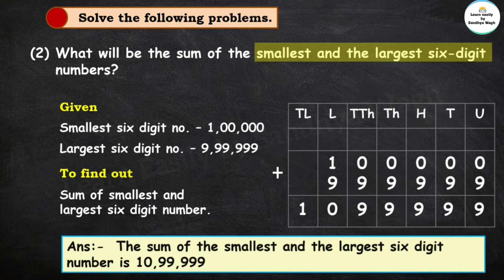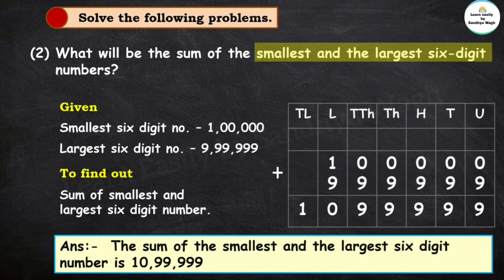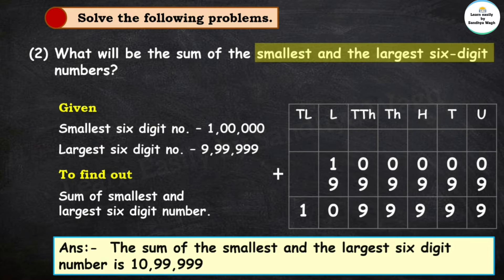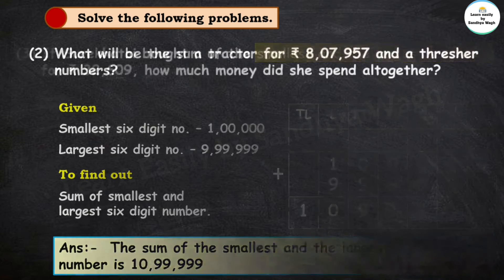So our final answer is: the sum of the smallest and the largest 6-digit number is 10,99,999.